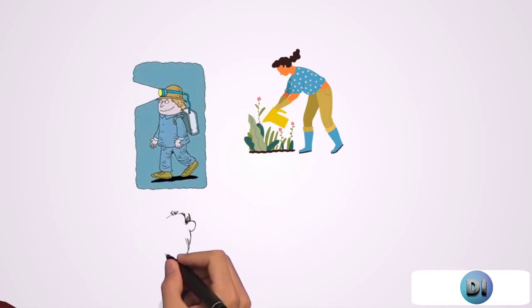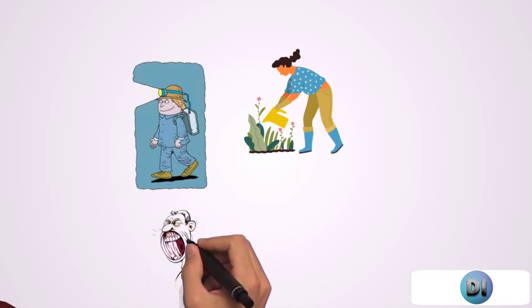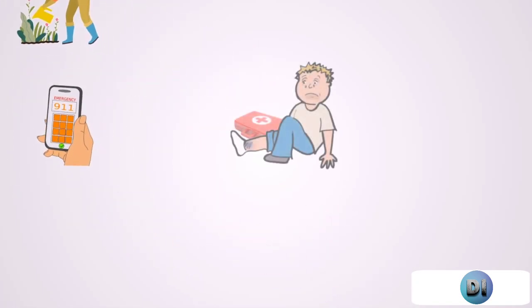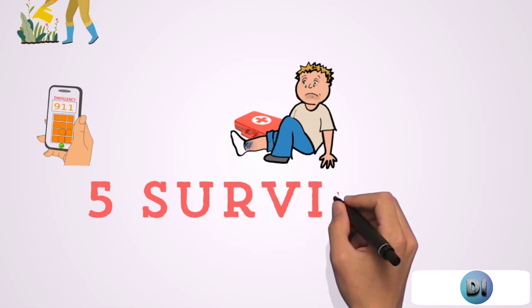If you get bitten, regardless of the snake that bites you, make sure to raise an alarm if anyone is nearby. Call 911 or your local emergency number. But while you wait in pain, here are 5 survival steps to take before the emergency services arrive.